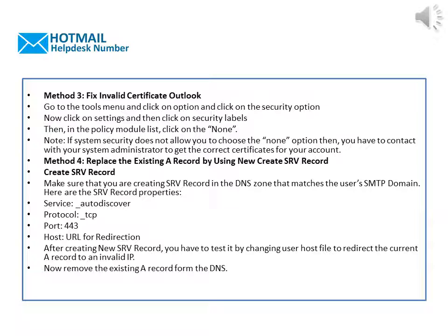Method 4, Replace the Existing A Record by Using a New SRV Record. Make sure that you are creating the SRV Record in the DNS zone that matches the user's SMTP domain. The SRV Record Properties are: Service: underscore autodiscover, Protocol: underscore TCP, Port: 443, Host: URL for Redirection. After creating the new SRV Record, test it by changing the user host file to redirect the current A Record to an invalid IP.